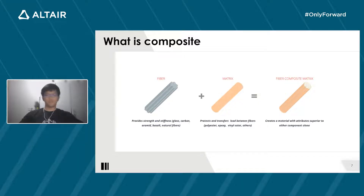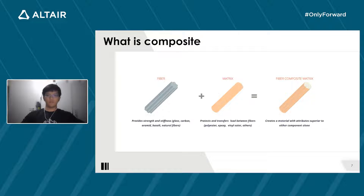So here is the short introduction of what the Formula Student Team is and what car racing is. Now into the topic of composites. So what is composites? A composite material is a combination of two materials with different physical and chemical properties. When they are combined, they create a material that is specialized to do a certain job — for instance, to become stronger, lighter, or resistant to electricity. They can also improve strength and stiffness.